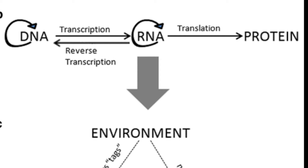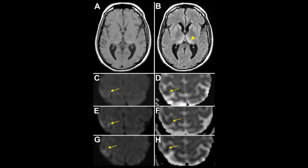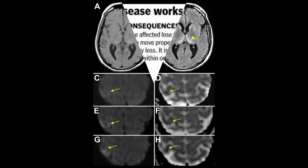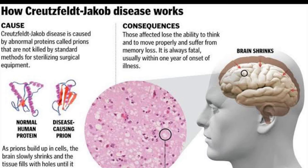Prion diseases are rare. Types of prion disease include CJD — a person can inherit this condition, in which case it is called familial CJD. Sporadic CJD, on the other hand, develops suddenly without any known risk factor. Most cases of CJD are sporadic and tend to strike people around the age of 60.